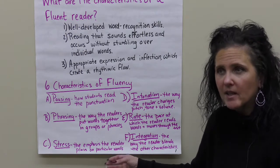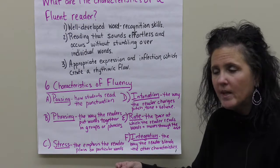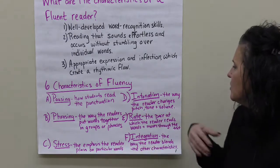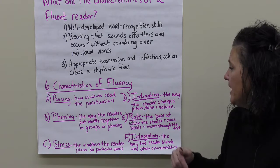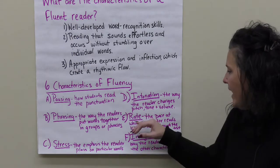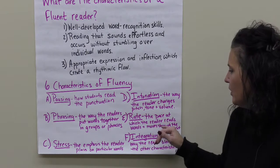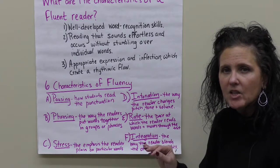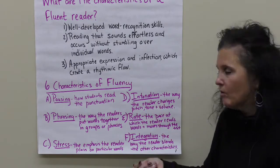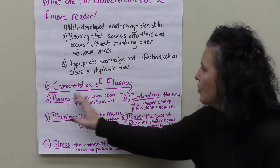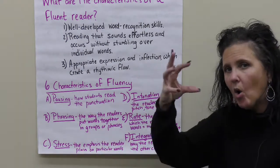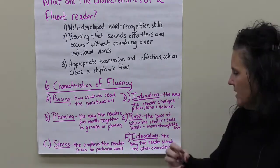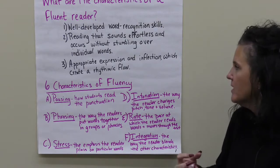Stress — there are punctuation marks for a reason: question marks, exclamation points, because we need to stress different words in different ways. Intonation — the way the reader changes pitch, tone, and volume. Rate — the pace at which the reader reads words and moves through the text. Are we flying through the text without paying attention, or are we reading carefully and trying to understand? Integration means we're using all of these other five characteristics together to blend them and make us a better reader.